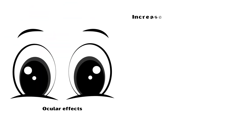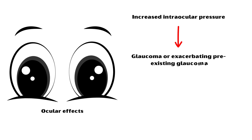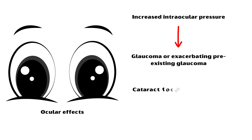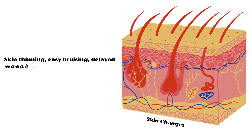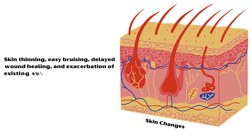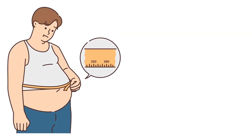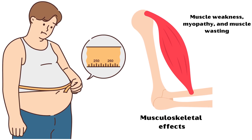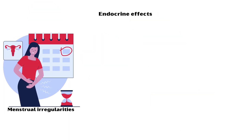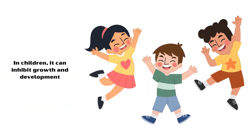Ocular effects, such as increased intraocular pressure leading to glaucoma or exacerbating pre-existing glaucoma. It may also induce cataract formation with long-term use. Skin changes, such as skin thinning, easy bruising, delayed wound healing, and exacerbation of existing skin conditions such as acne and rosacea. Weight gain. Musculoskeletal effects like muscle weakness, myopathy, and muscle wasting, particularly with prolonged use. Endocrine effects, including menstrual irregularities, hirsutism, and adrenal suppression. In children, it can inhibit growth and development.